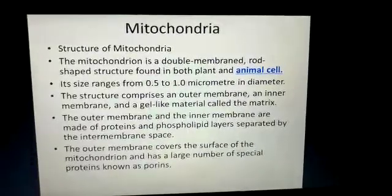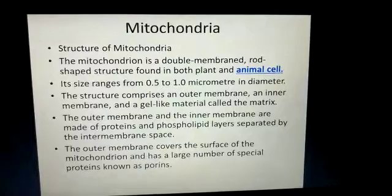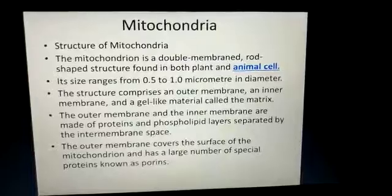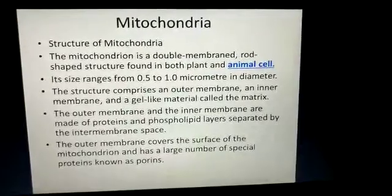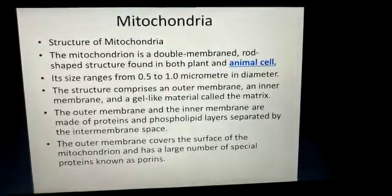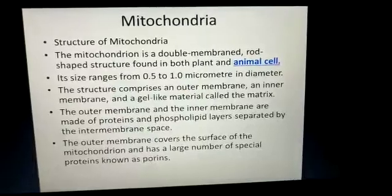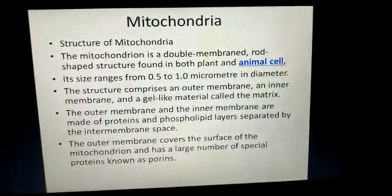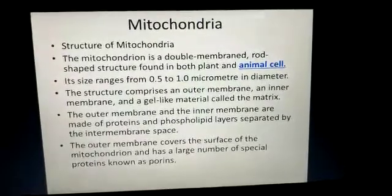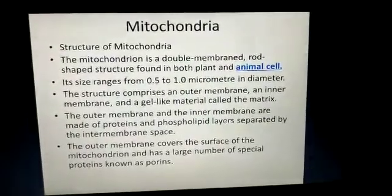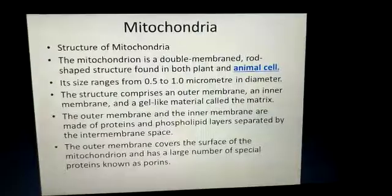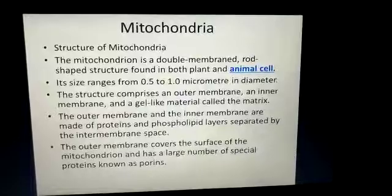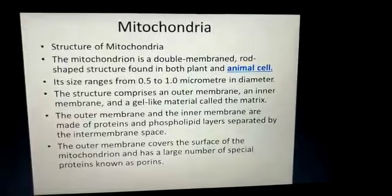Apart from that, we have another membrane which is called the inner membrane, and in the inner membrane we have a gel-like structure which is called the matrix. The outer membrane and inner membrane are both protein and phospholipid layers. Between the two membranes there is a separate space called the inter-membrane space.